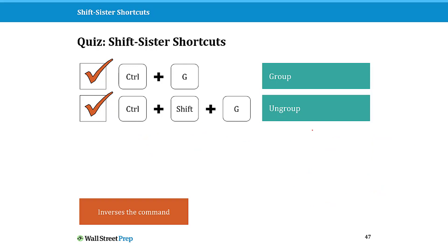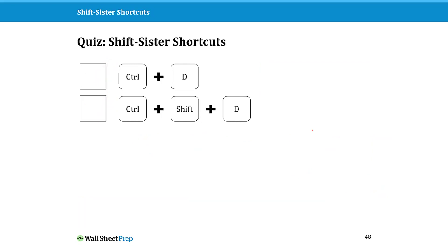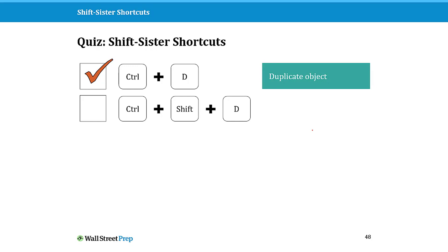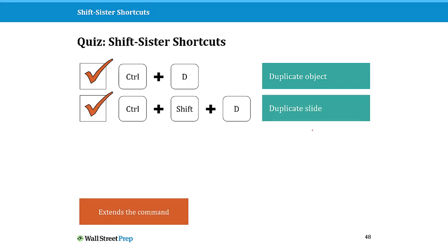Let's look at another set of shift sister shortcuts. If Ctrl+D is to duplicate an object — and I'm going to show you its hidden jump feature in just a second — what do you think Ctrl+Shift+D would do? Hopefully it won't inverse and 'unduplicate' an object. In this case, it's going to duplicate your slide, so you're extending the command.